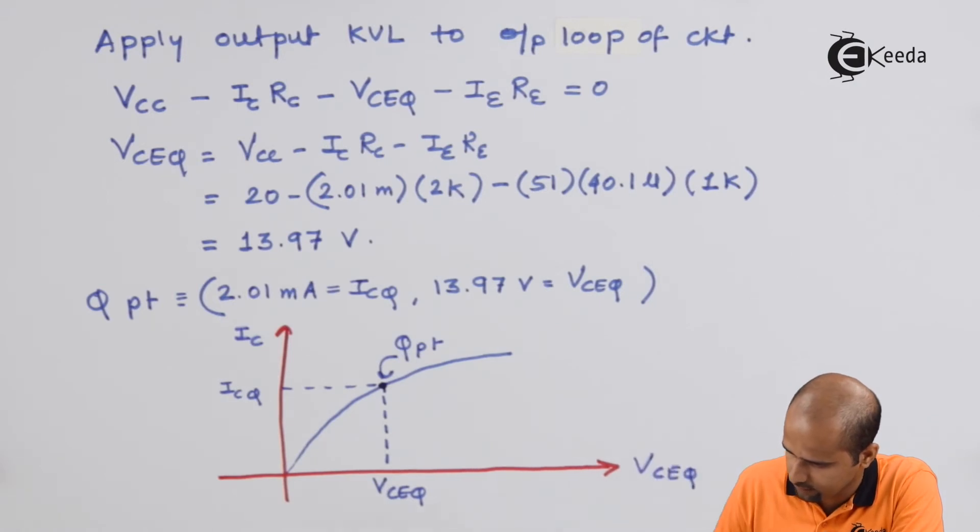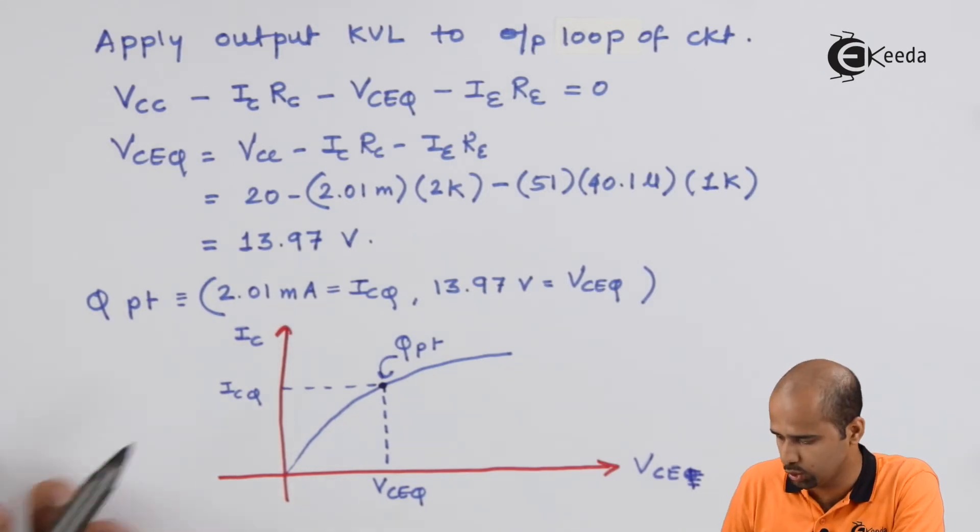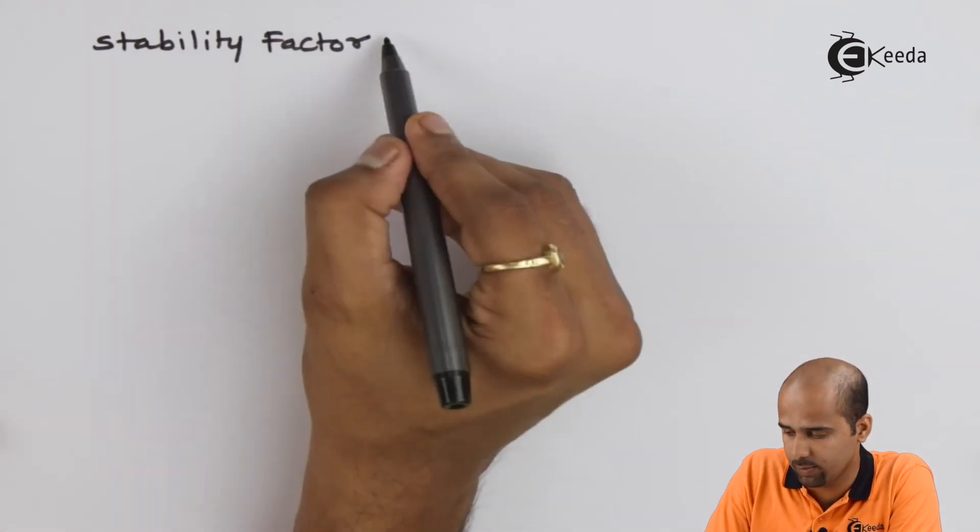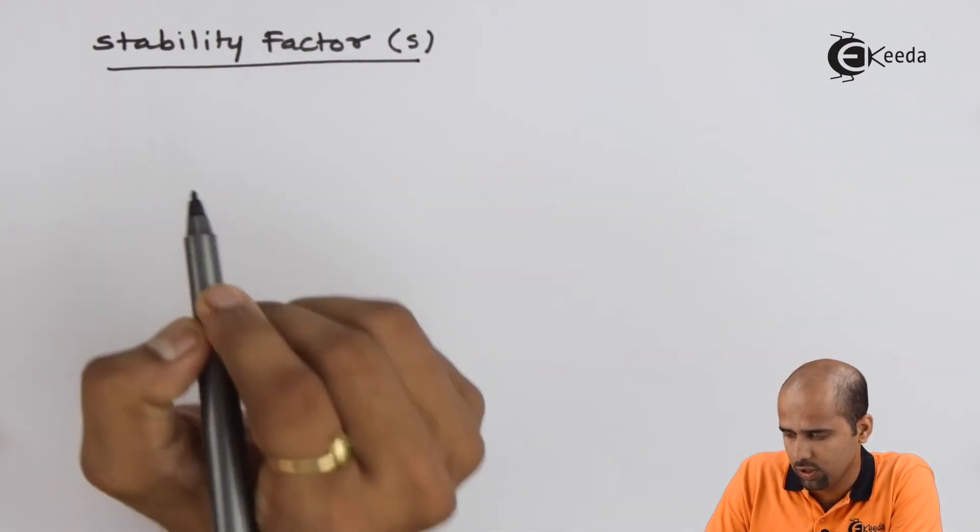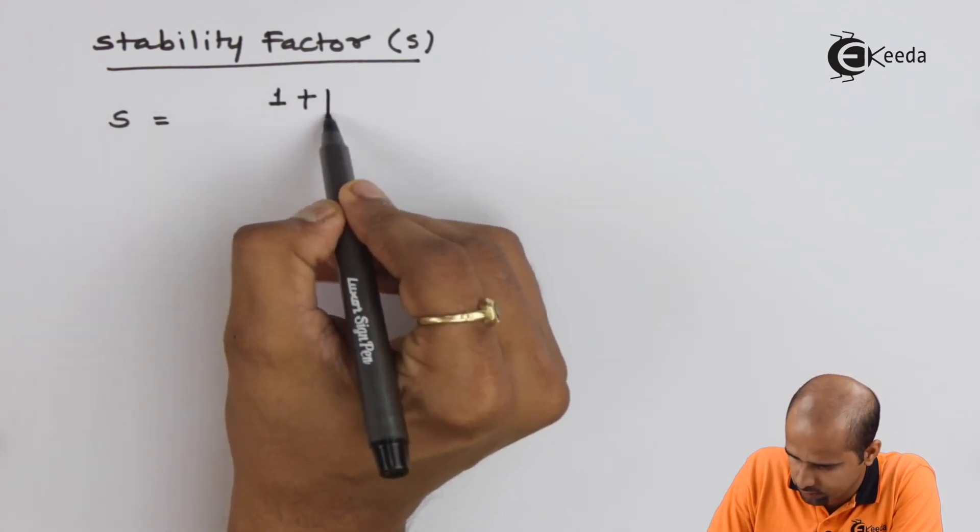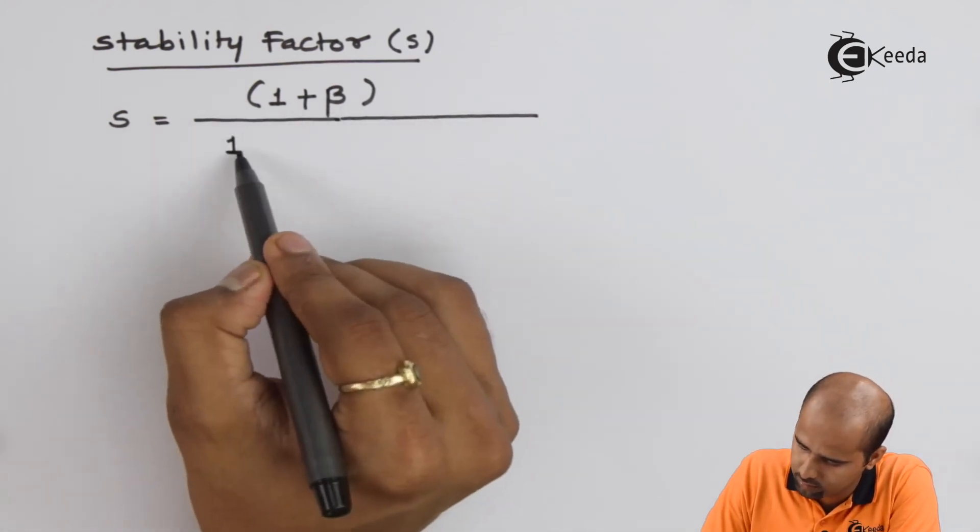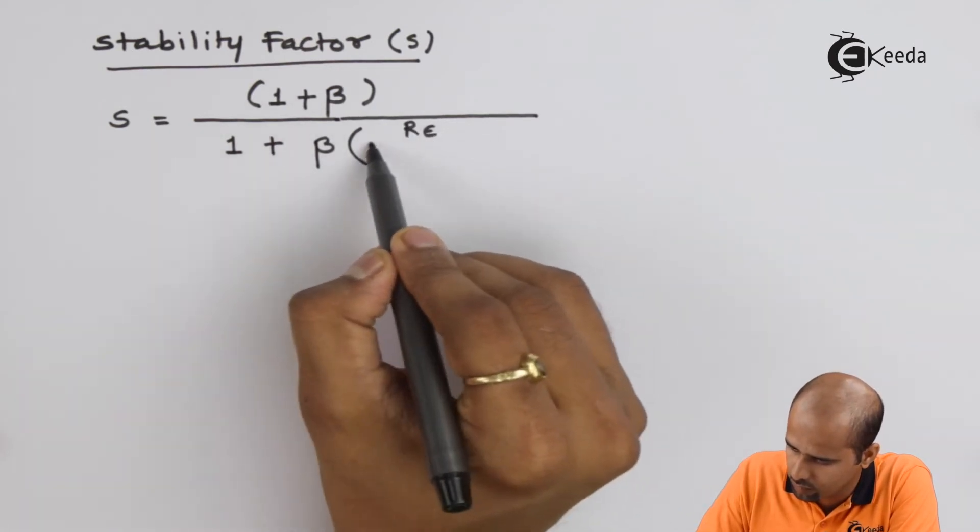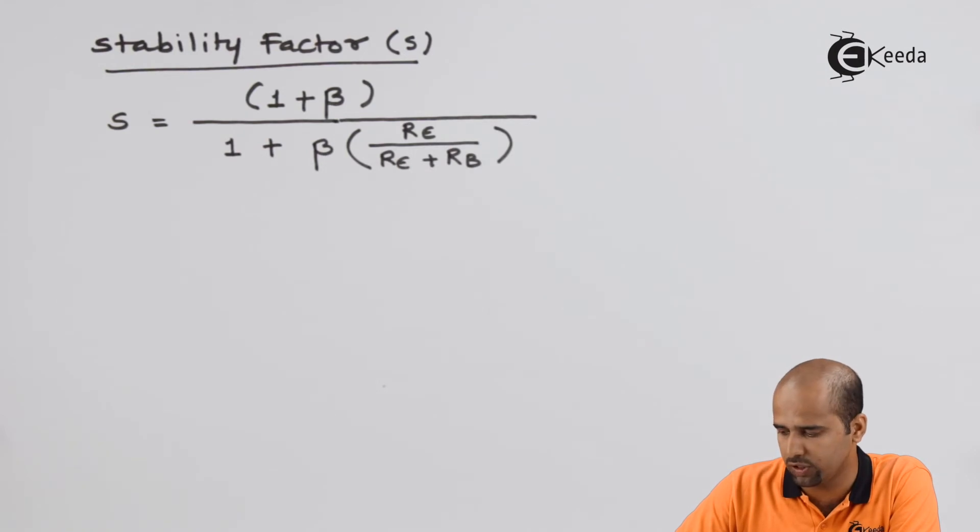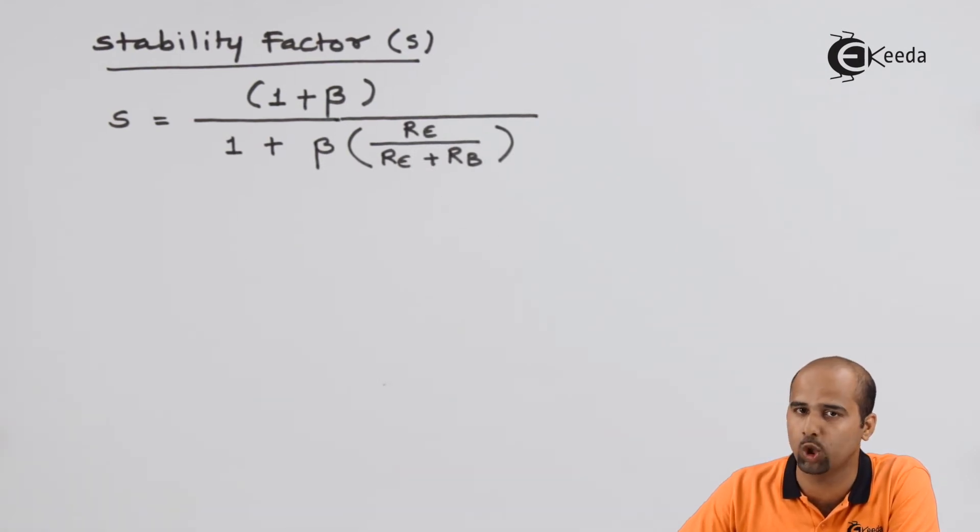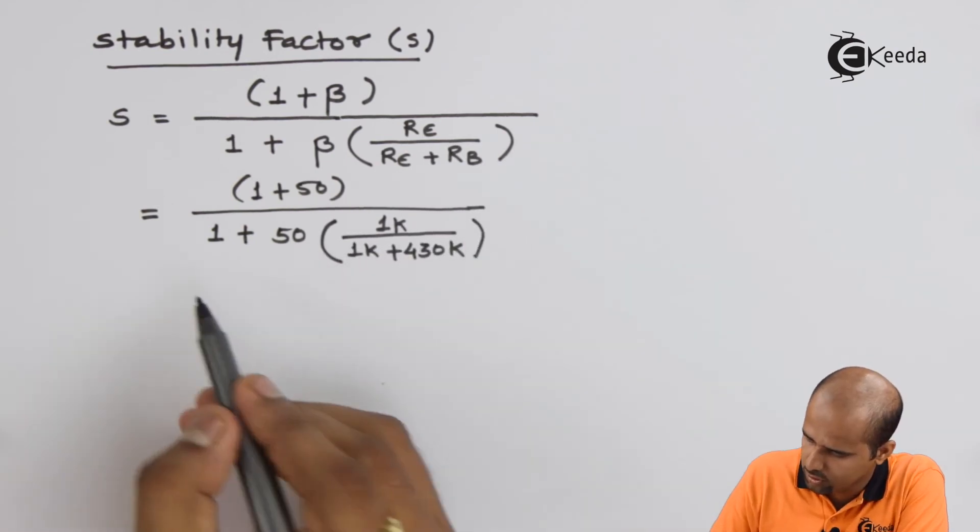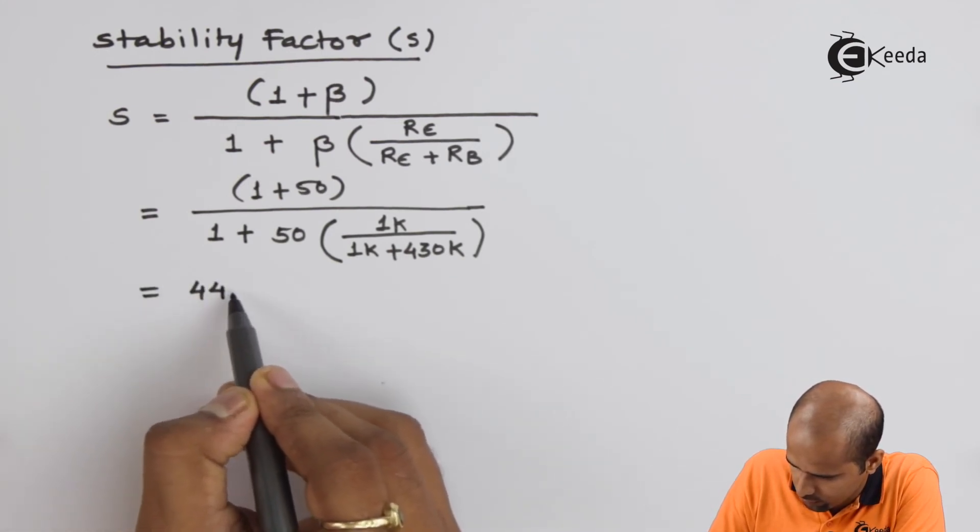We have to decide the stability factor that is S. You all know that with fixed bias, with emitter resistance RE, your stability factor will come out to be. And we just have to put the value of all the RE, RB, beta. And then we will be getting the value of S. Obviously, it will be less than 1 plus beta. This is coming out to be 44.8.